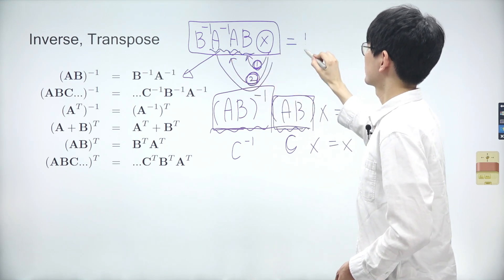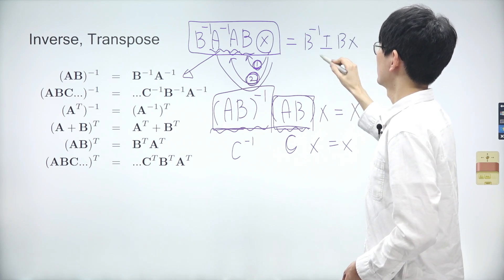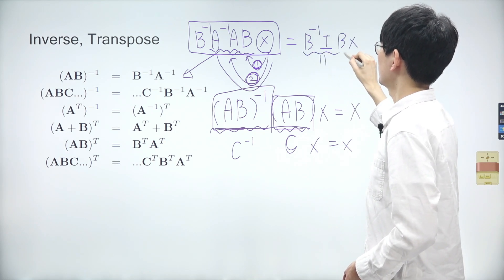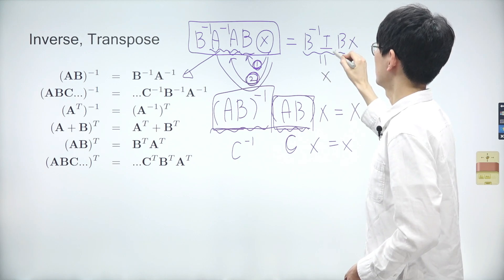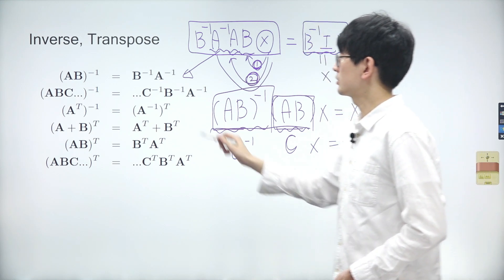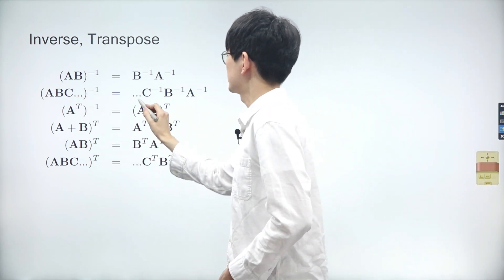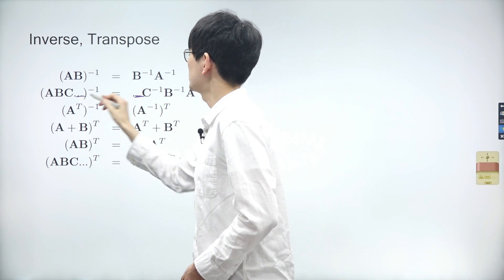Alternatively, we can think about it differently. Since A inverse A equals the identity matrix, we can rewrite the equation as B inverse I B X. Since the identity matrix does not affect the calculation, we can simplify it. This is how we can prove the first property.